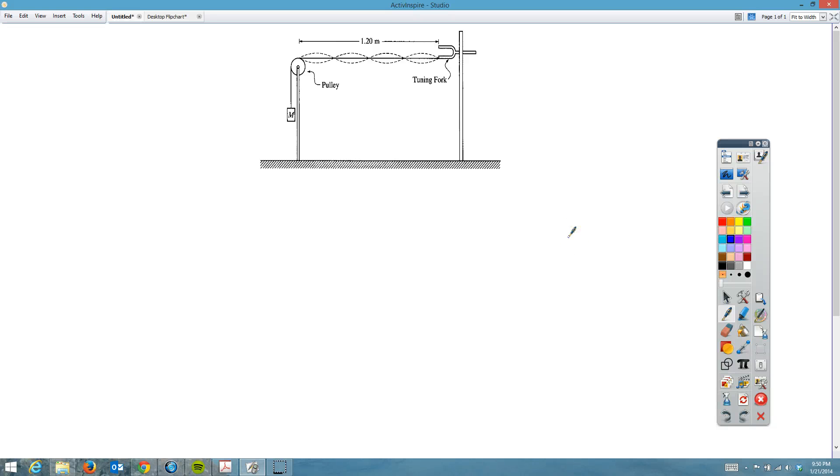This is problem 1995 and it's worth 10 points. Basically, we've been using this for a single loop and there's a string, so you can actually see that string here is attached to a tuning fork. The tuning fork has a frequency of 120 hertz.